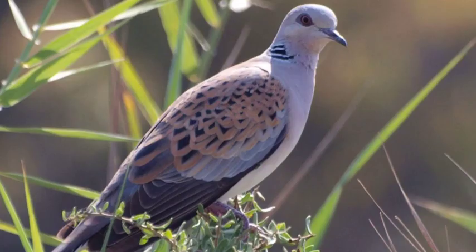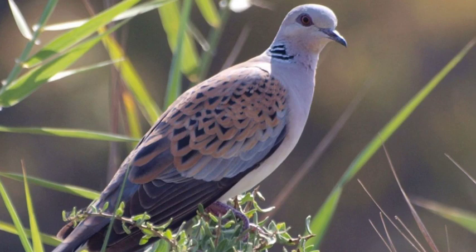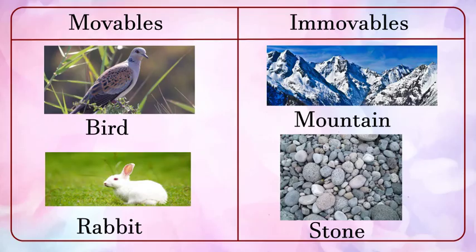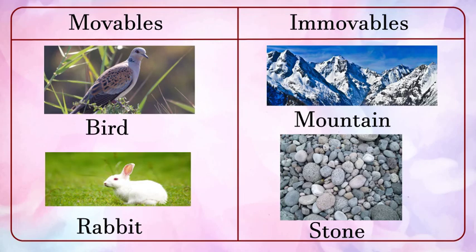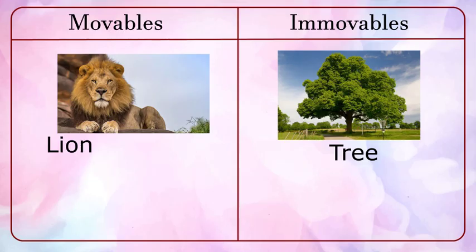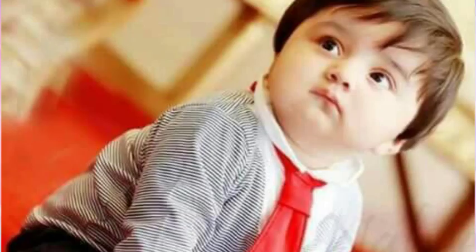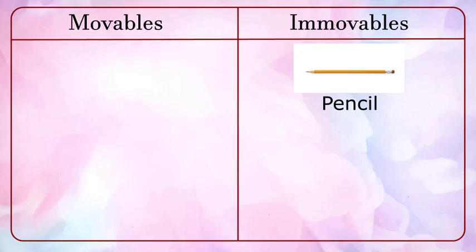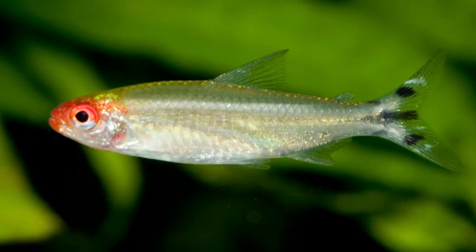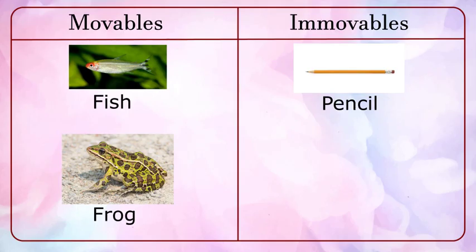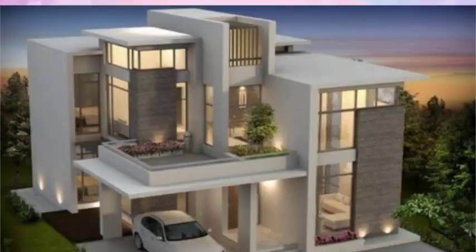Bird — movable or immovable? It's movable. Rabbit — movable. Stone — immovable, it cannot move of its own. Tree — immovable. Lion — movable. Bag — immovable. Boy — movable, very good. Pencil — immovable. What about fish? It is movable. Frog — movable, very good. And house — immovable.